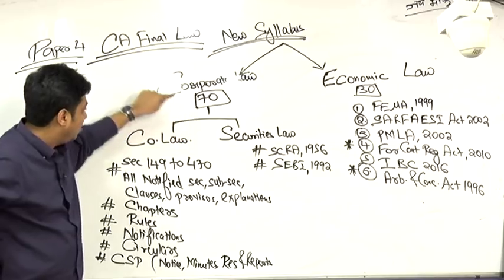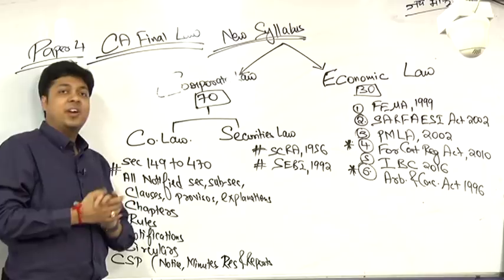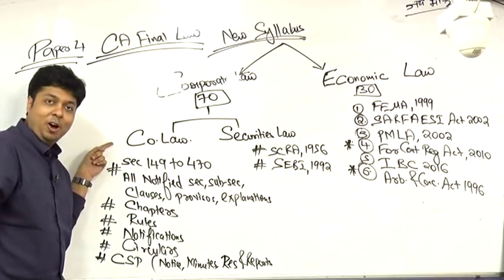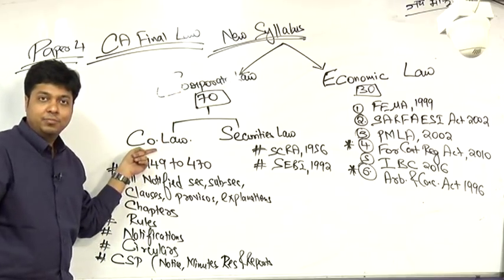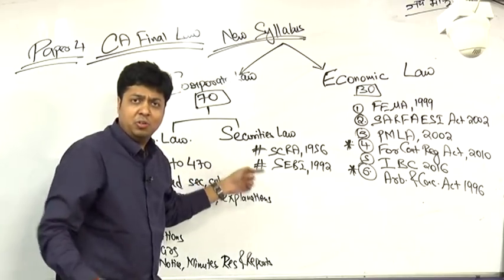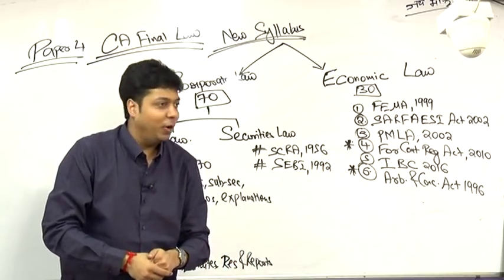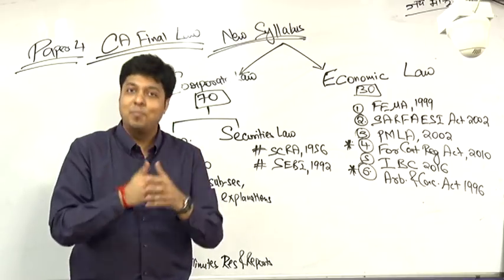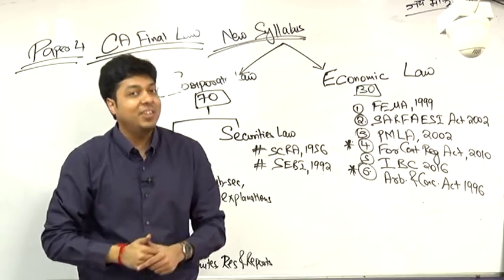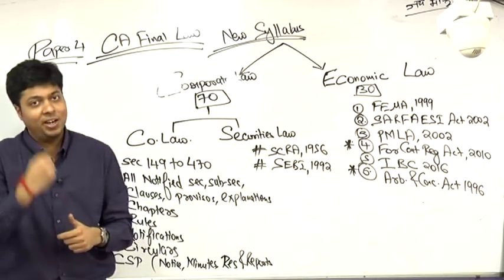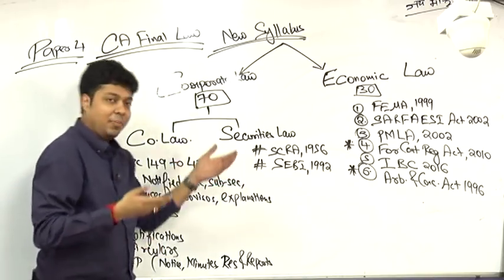So corporate law is of 70 marks. Corporate law, which is 70 marks, the institute has divided into two parts. One is Company Law and one is Securities Law. You will say corporate law and company law is the same, but corporate law will also be applied to the security law. Today the SEBI law applies to listed companies or unlisted companies which have applied for listing to any recognized stock exchanges. Then there will also be SEBI law applicable on that.